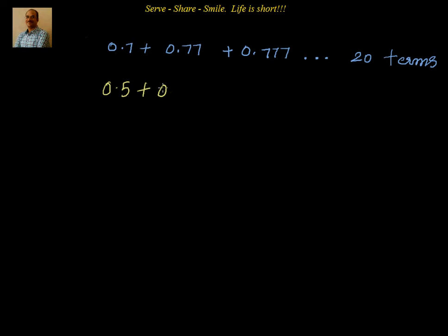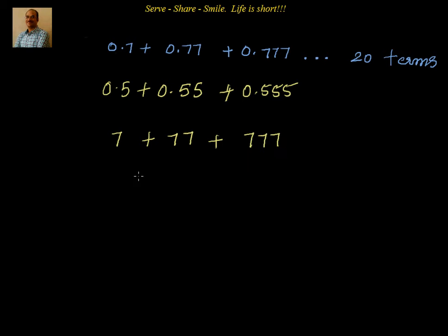The same type of problem can appear as 0.5 plus 0.55 plus 0.555, or with 3, 2, 9 — any digit. The problem can also be slightly different, such as 7 plus 77 plus 777, or 5 plus 55 plus 555. The logic we are going to follow is the same for all of these.